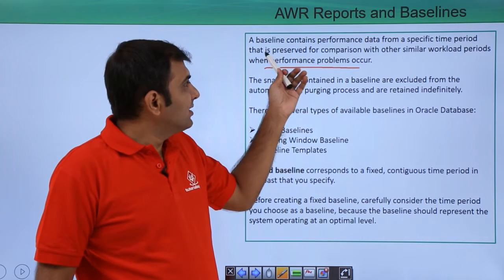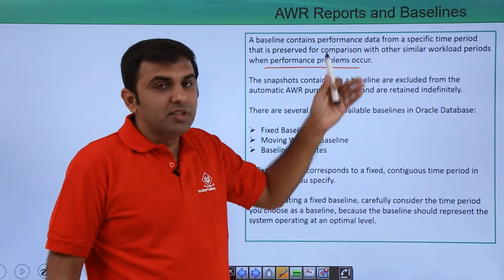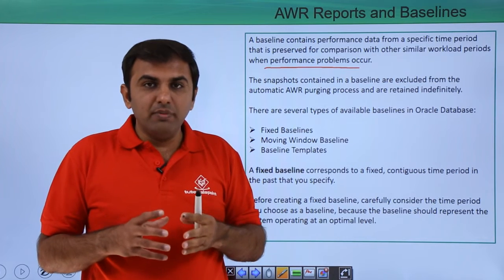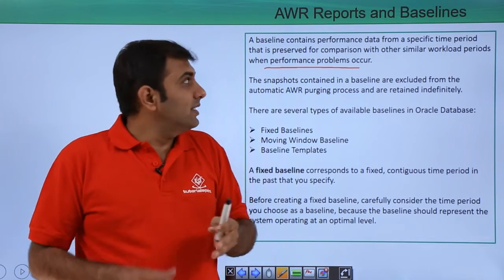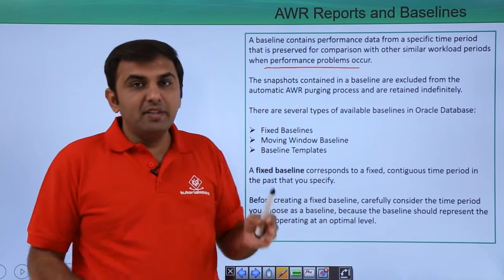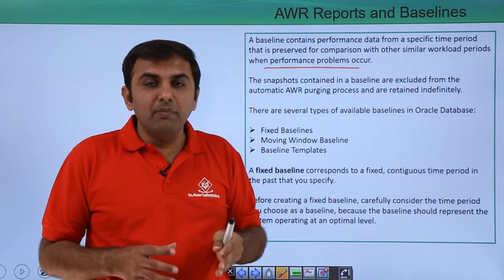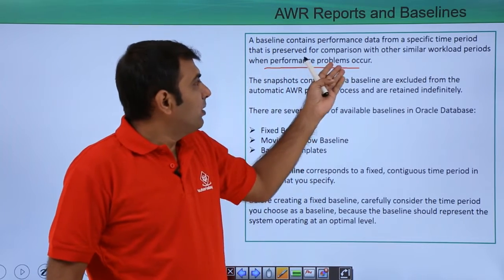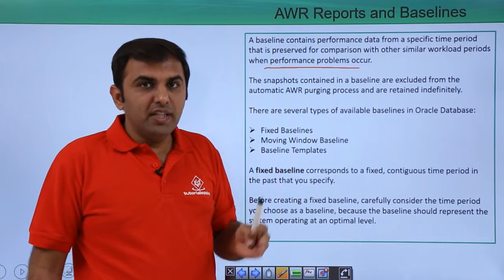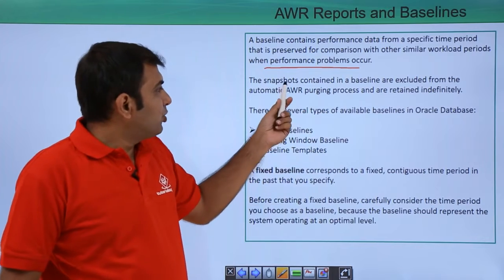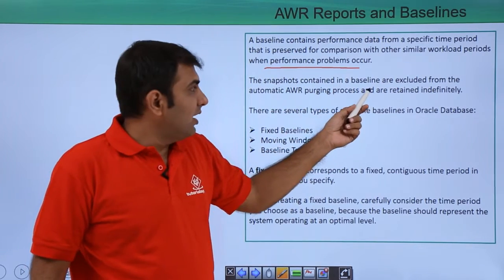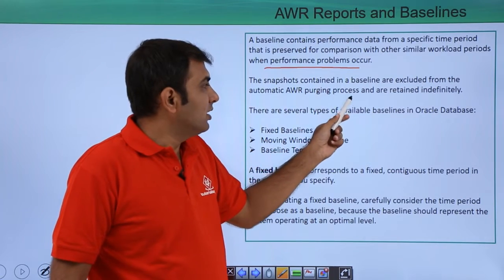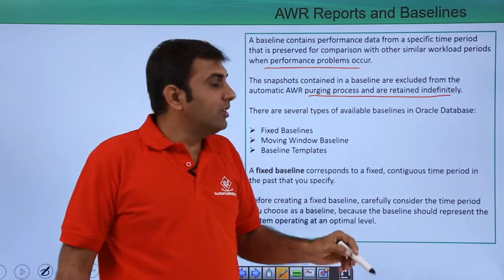A baseline contains the performance data from a specific time period — it stores information about your database, what actually happened during that time period. That information you can compare with other workload periods when performance problems occur. The snapshots contained in the baseline are excluded from the automatic AWR purging process and are retained indefinitely.